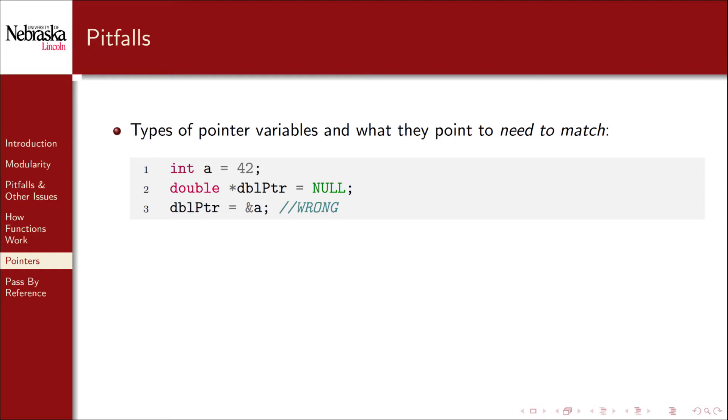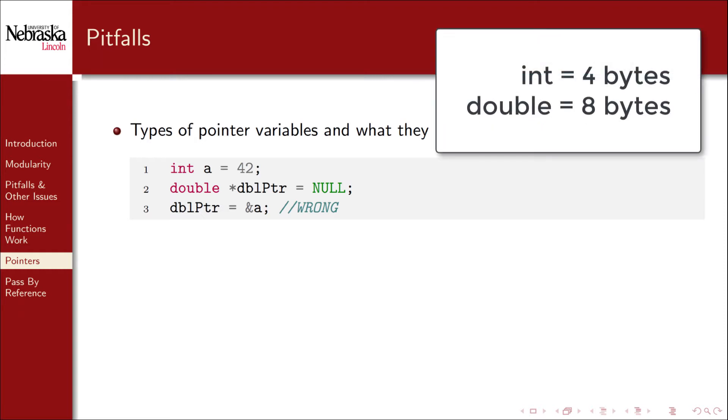In this case we've got a double pointer and try to force it to point to an integer. This will likely compile and run but it won't give us the results that we want. The double pointer will be expecting to point to a memory location that holds eight bytes of data.